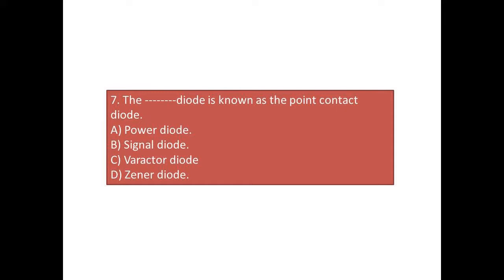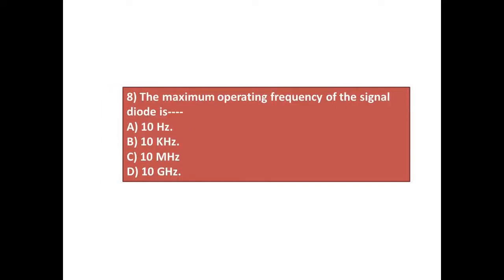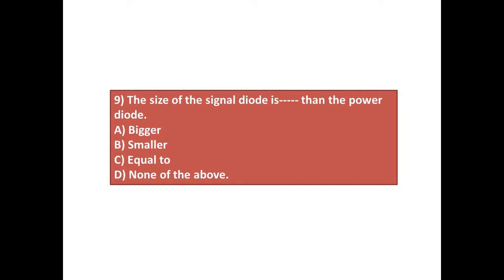Question number eight: The maximum operating frequency of the signal diode is answers: A) 10 hertz, B) 10 kilohertz, C) 10 megahertz, D) 10 gigahertz. Question number nine: The size of the signal diode is dash than the power diode. Answers: A) bigger, B) smaller, C) equal to, D) none of the above.